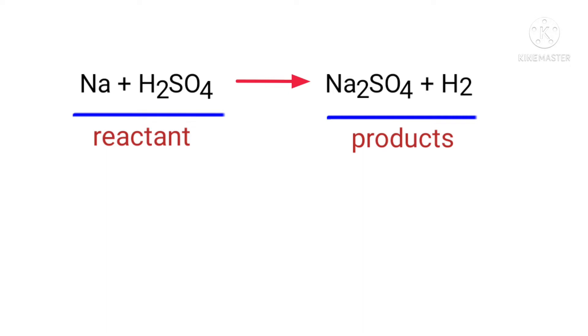In this equation, the reactants are sodium and sulfuric acid and the products are sodium sulfate and hydrogen. If you look at this equation, the equation is not balanced.